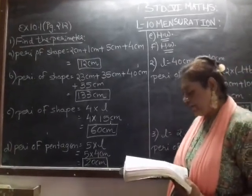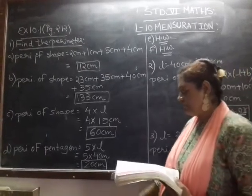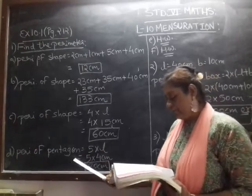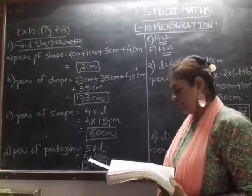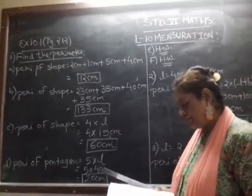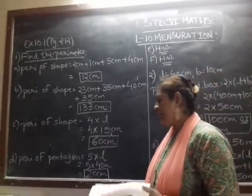Question number D is given shape of pentagon, 5 sides. So perimeter of pentagon, 5 sides are same, right? So 5 into L, so 5 into 4 centimeter, your answer is 20 centimeter.